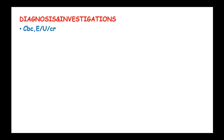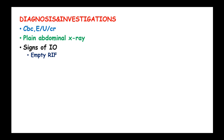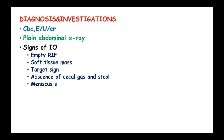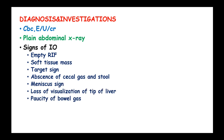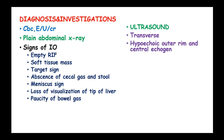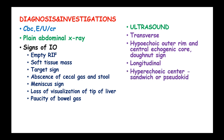Diagnosis and investigations include a complete blood count, urea, electrolytes, and creatinine levels. Plain abdominal X-ray shows signs of intestinal obstruction such as the target sign, absence of cecal gas and stool, the meniscus sign, and loss of visualization of the tip of the liver with paucity of bowel gas. Ultrasound shows a transverse hypoechoic outer rim and central echogenic core — the doughnut sign — and longitudinally a hypoechoic center with the sandwich or pseudokidney sign.